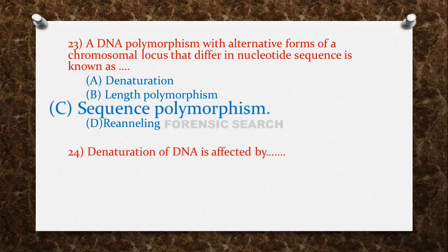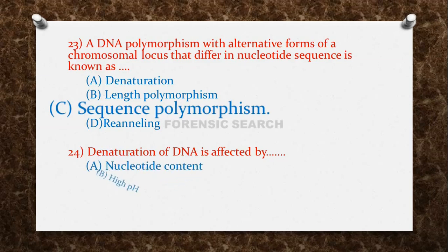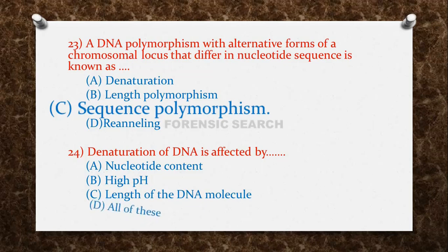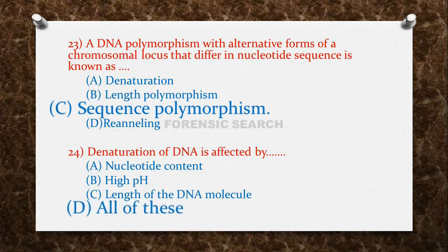The next question: denaturation of DNA is affected by — Option A: nucleotide content. Option B: high pH. Option C: length of the DNA molecule. Option D: all of these. The correct answer is option D — all of these.